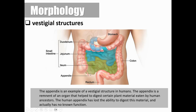In humans, we have an appendix. This is just a remnant organ that helped our ancestors digest certain plant material, but of course we no longer need the ability to digest that material. So the appendix no longer serves a function.